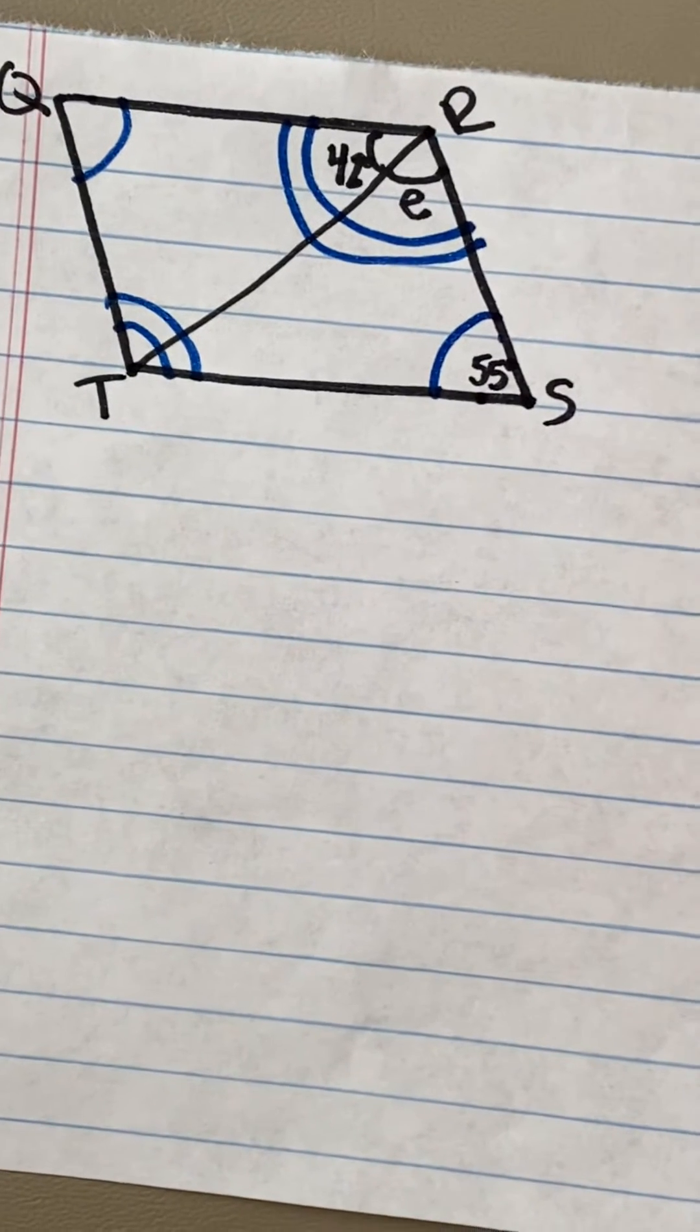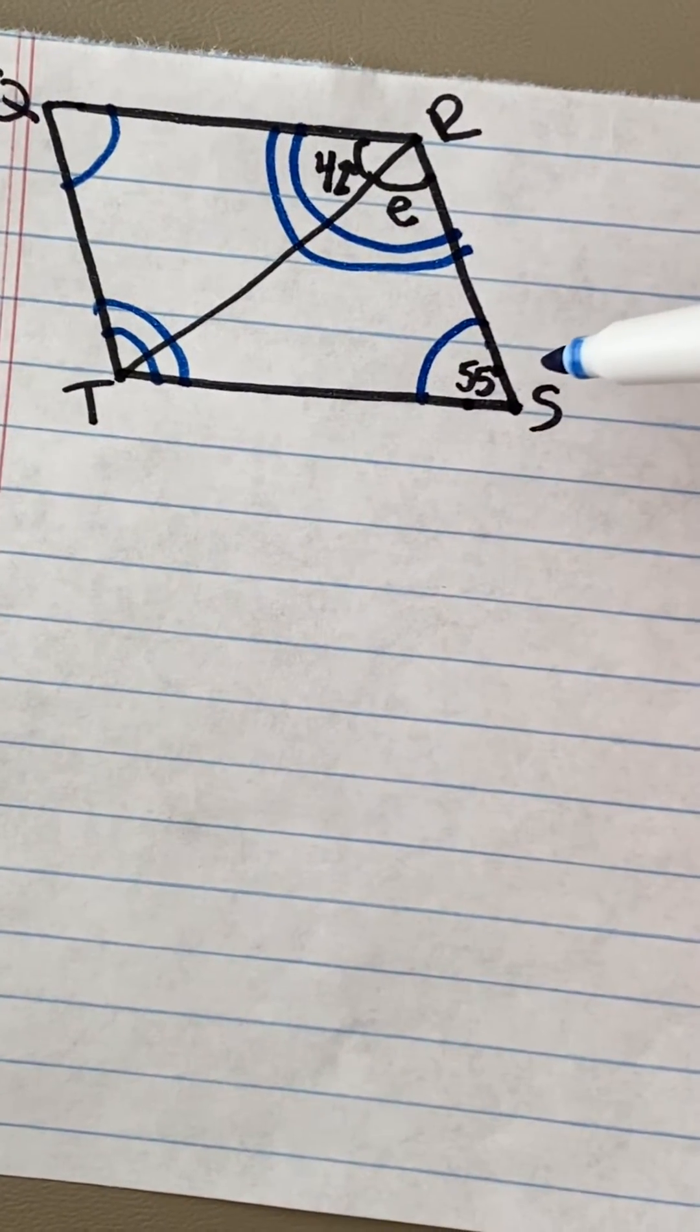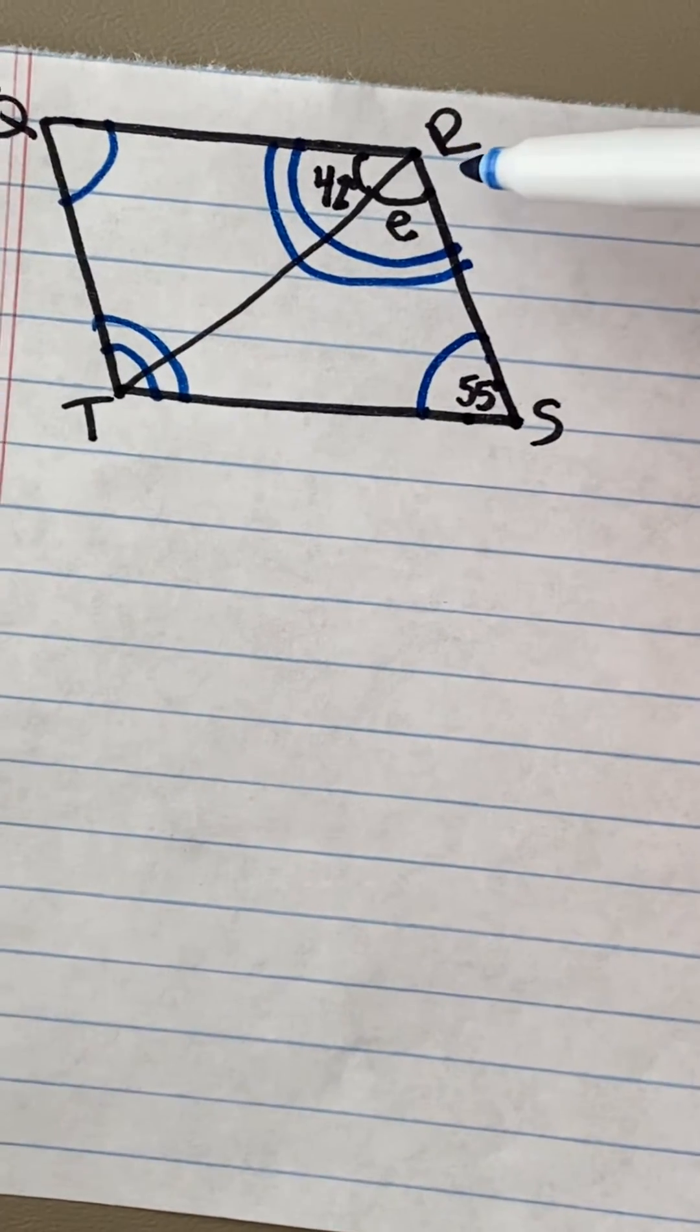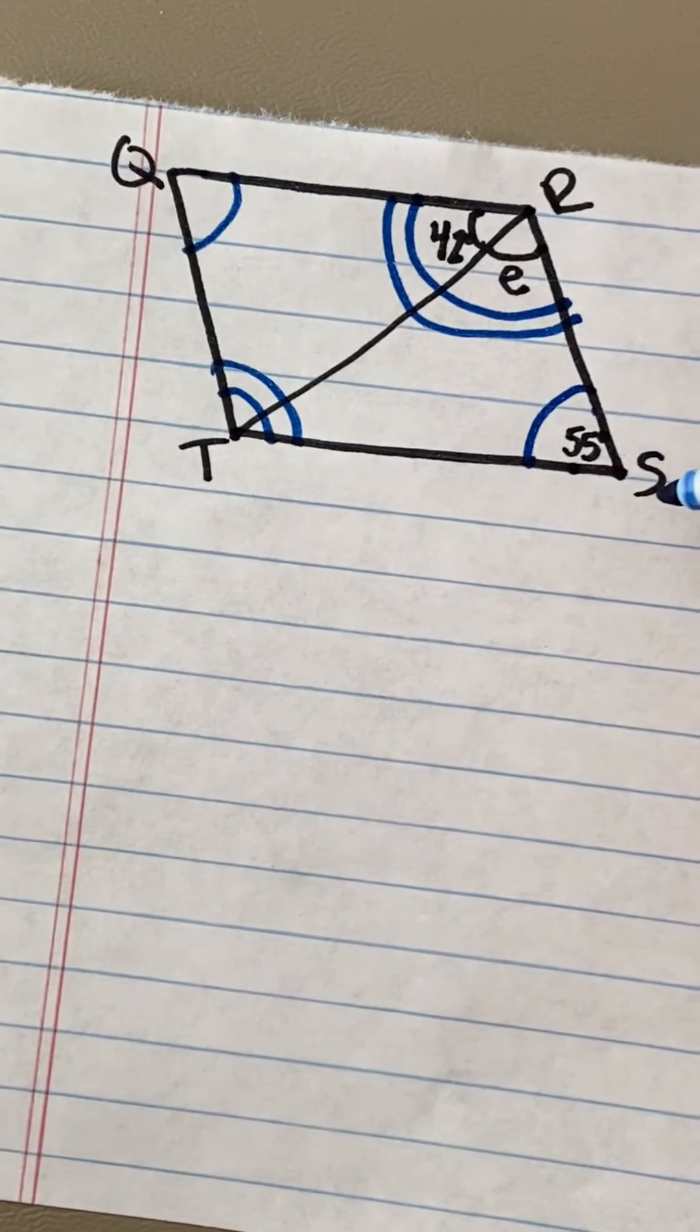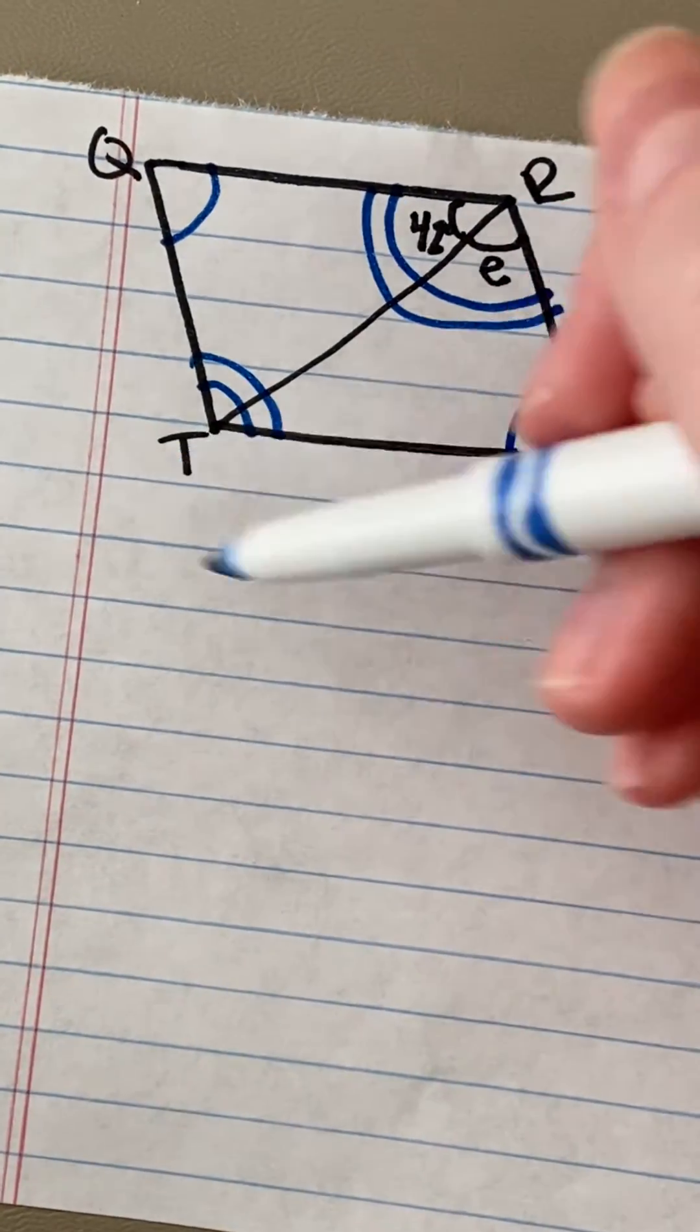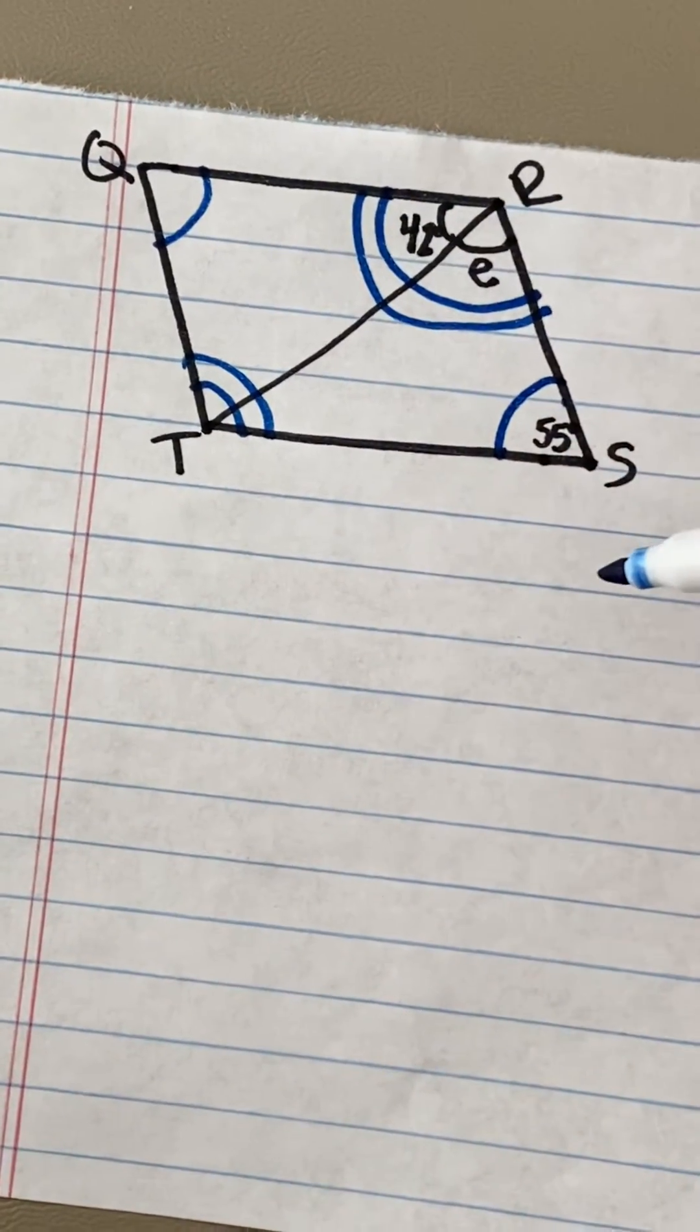We have also learned that the angles between parallel lines equal 180 degrees. So angle R and angle S, the sum of those would equal 180 degrees. The sum of angles S and T would equal 180 degrees and so on throughout our parallelogram.